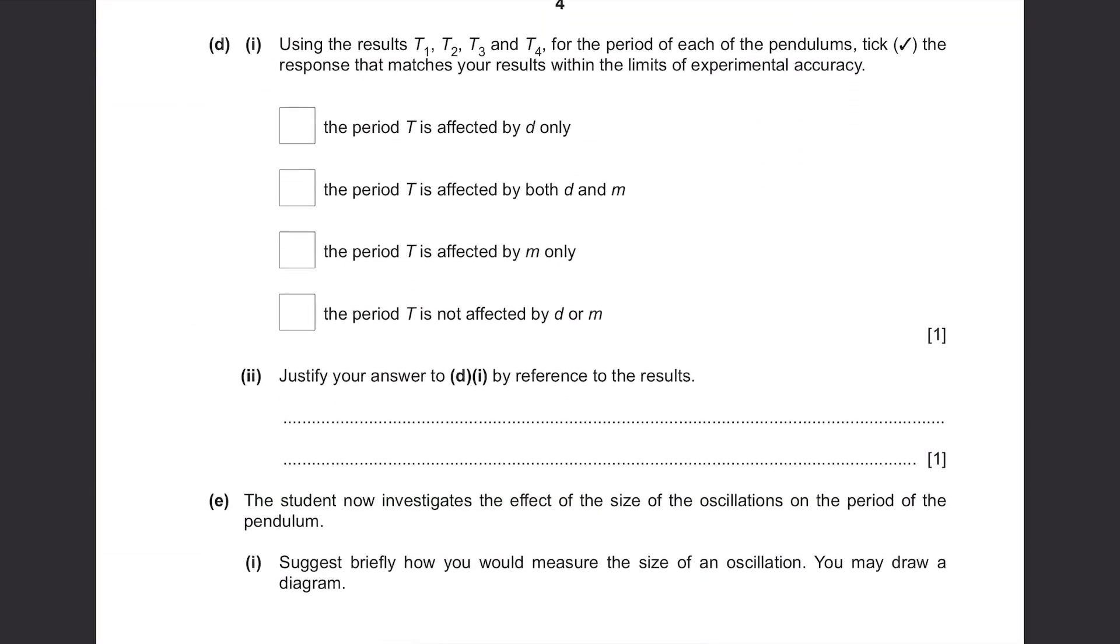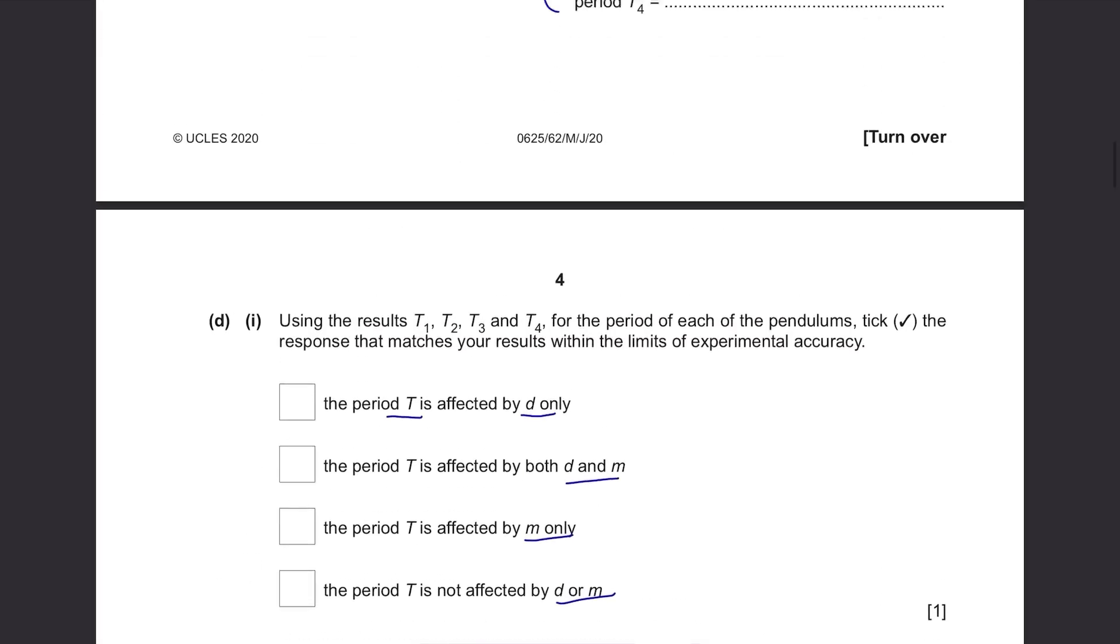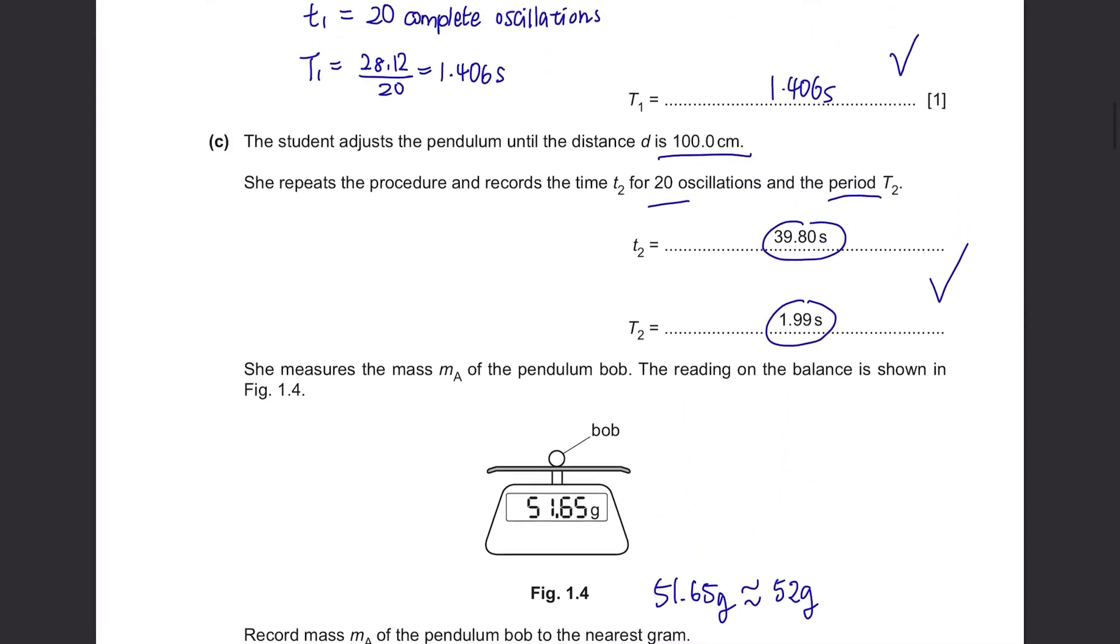Part D. Using the results t1, t2, t3, and t4, the period of each of the pendulums, take the response that matches your results within the limits of experimental accuracy. The options show whether period T is affected by d or m.